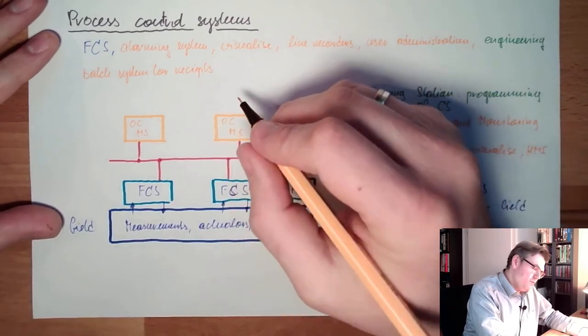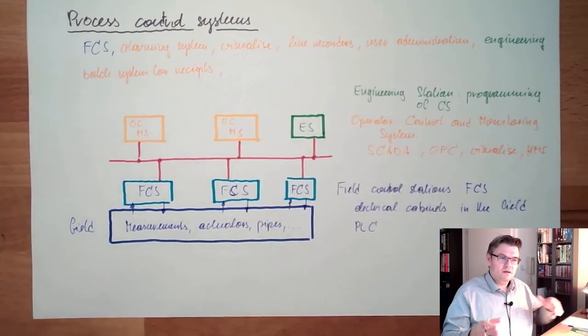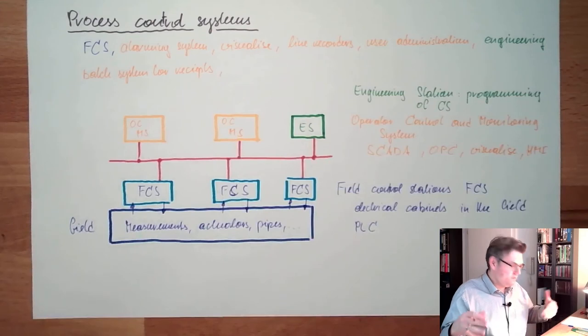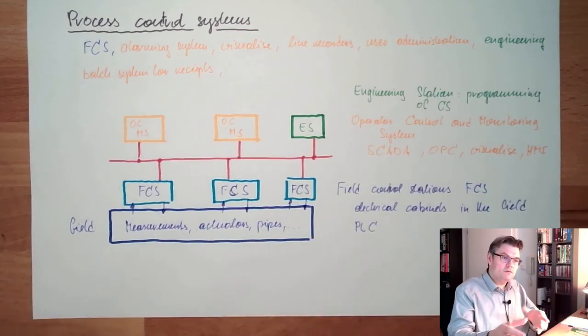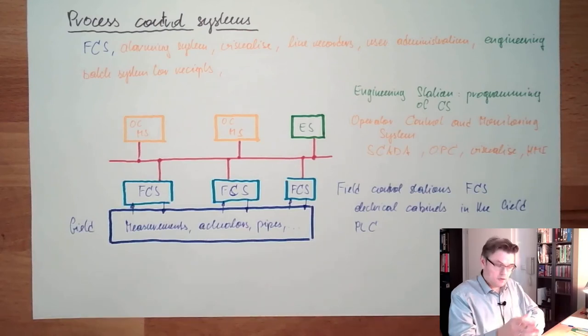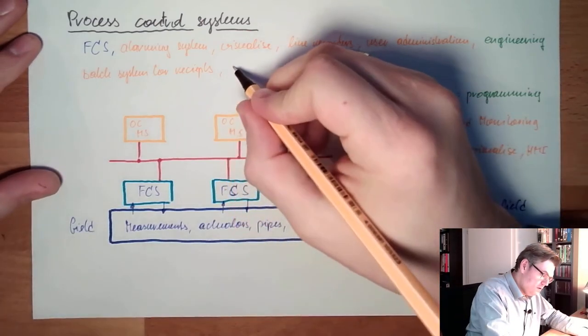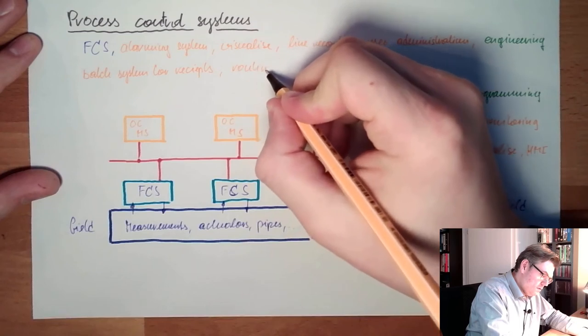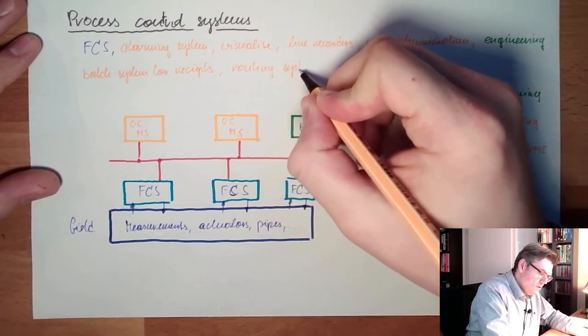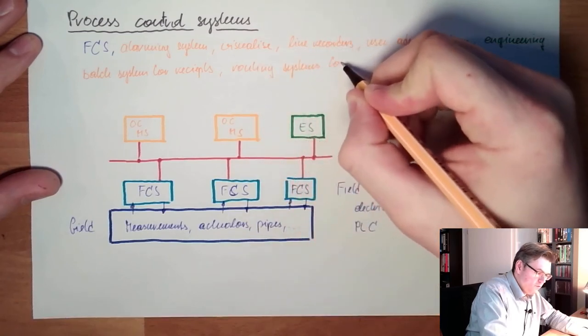Then a routing system for transport. For instance, at the airport, you have to route this suitcase to another terminal than this suitcase. So routing systems for transport paths.